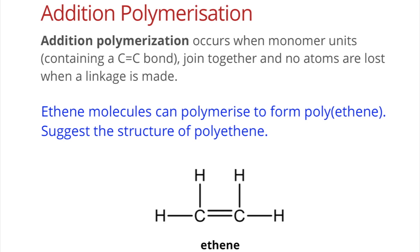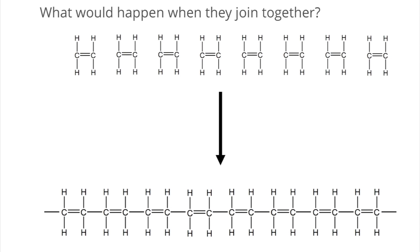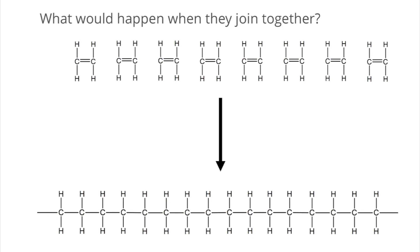Look at the structure of ethene below. You may want to pause the video and think about what the structure of polyethene would look like if many of these monomer units join together. If you look at every carbon in an incorrect structure, every carbon has five bonds — this is not possible because it violates the octet rule. So the carbon-carbon double bond needs to break first to free up electrons for sharing with the neighboring carbon atoms.